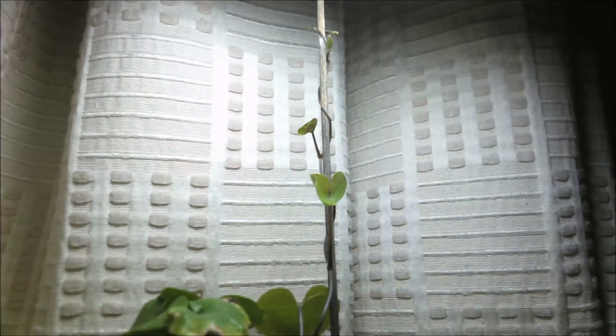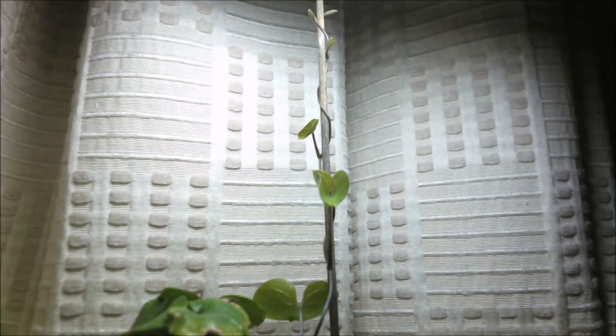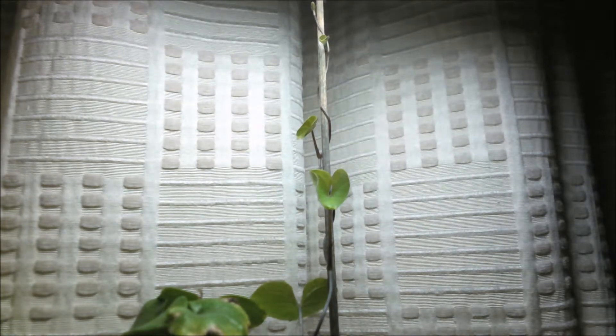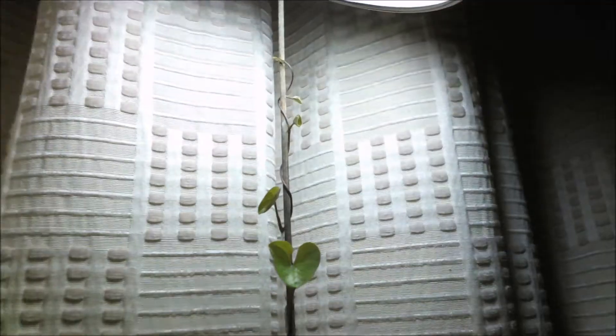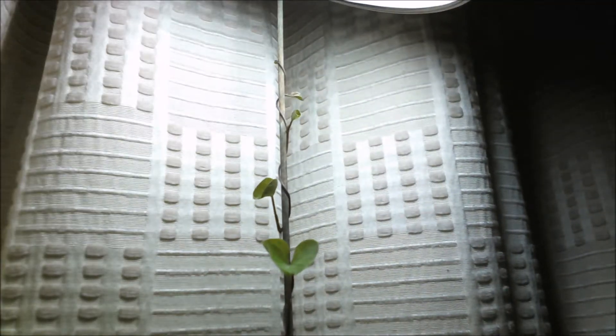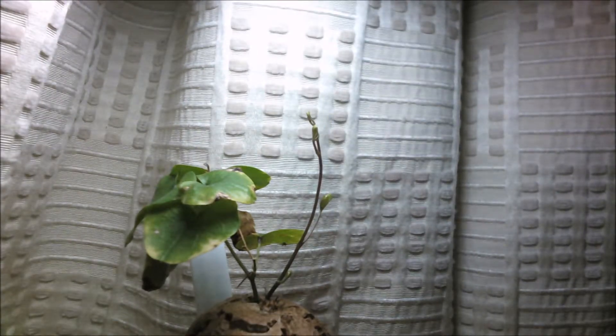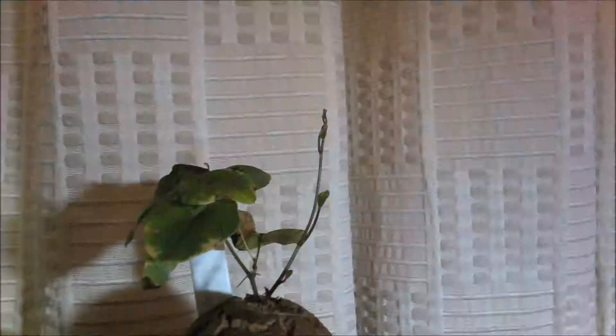So to start with when the plant is still not too old and the stem is quite young, instead of a spiraling motion it's actually an up and down motion. So that's the first movement it starts with. There's a slight oscillation up and down.